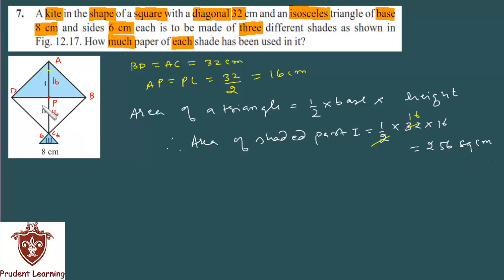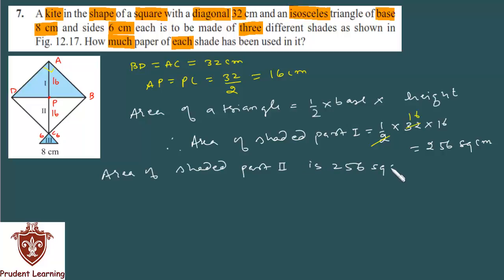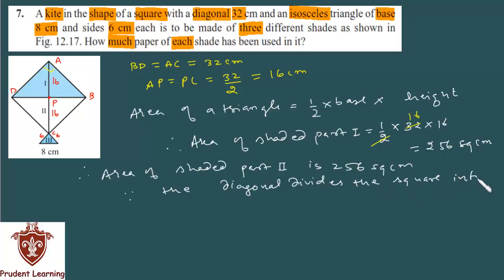The area of shaded part 2 is also 256 square centimeters. The reason: since the diagonal divides the square into two congruent triangles, each of the triangles has the same area. Therefore both shaded part 1 and shaded part 2 have equal area of 256 sq cm. Now we need to find the area of the small isosceles triangle — the 3rd shaded part.